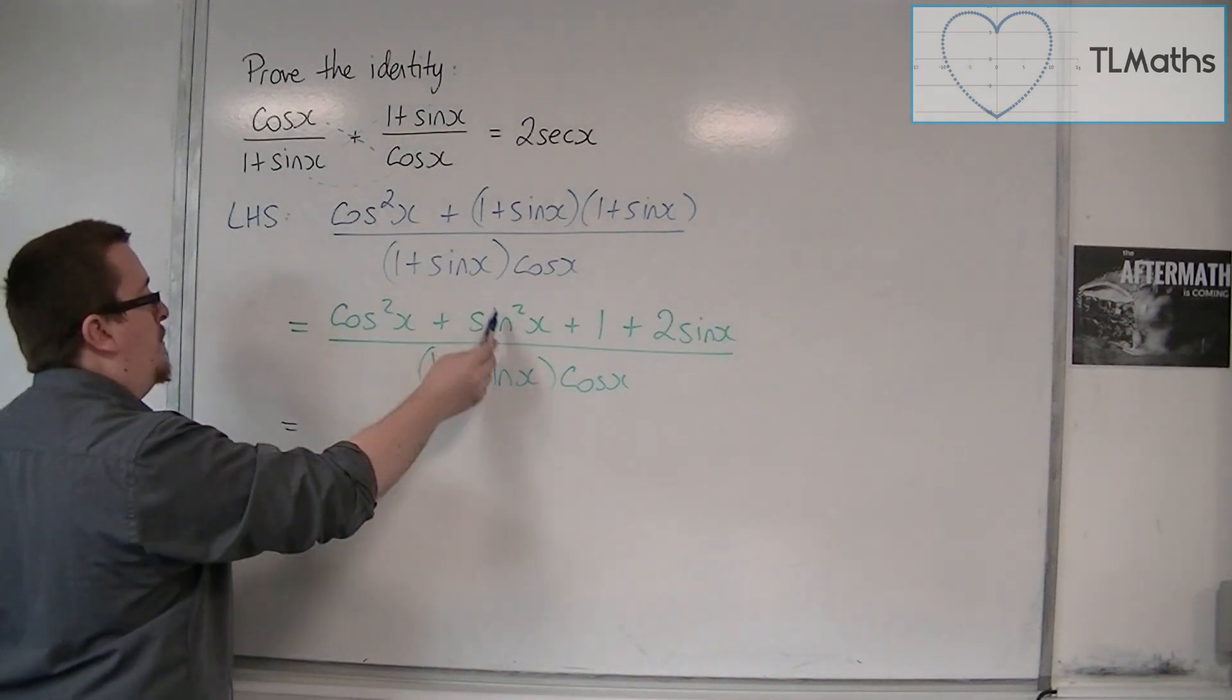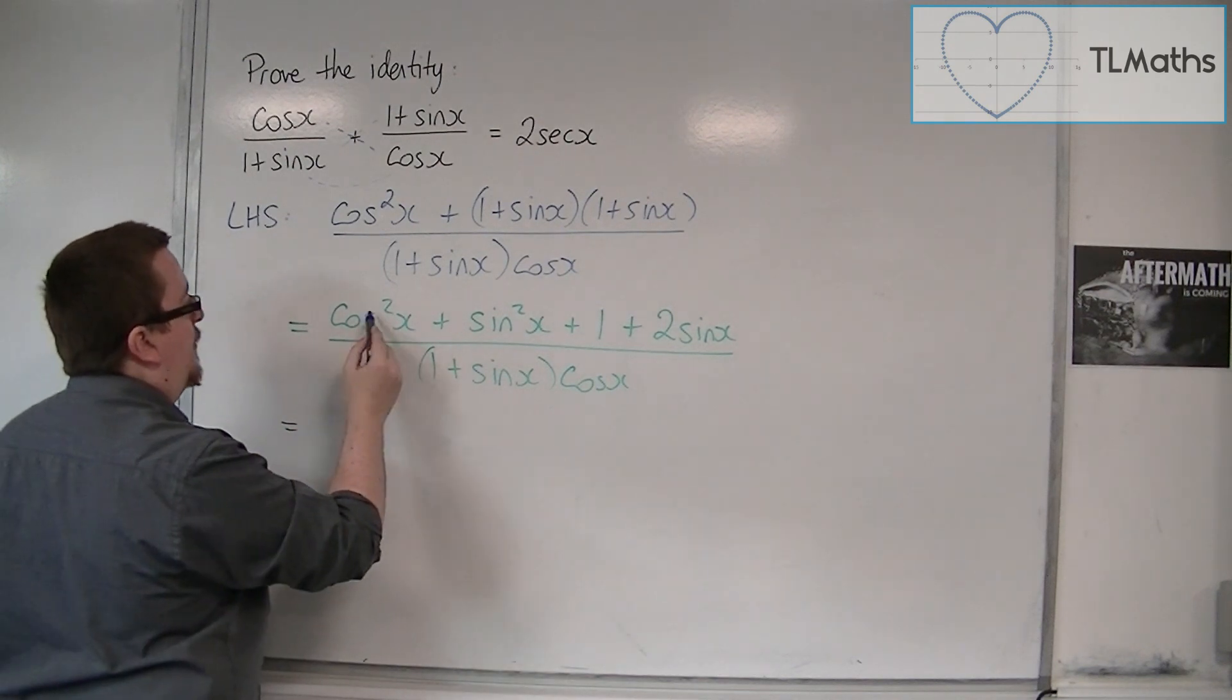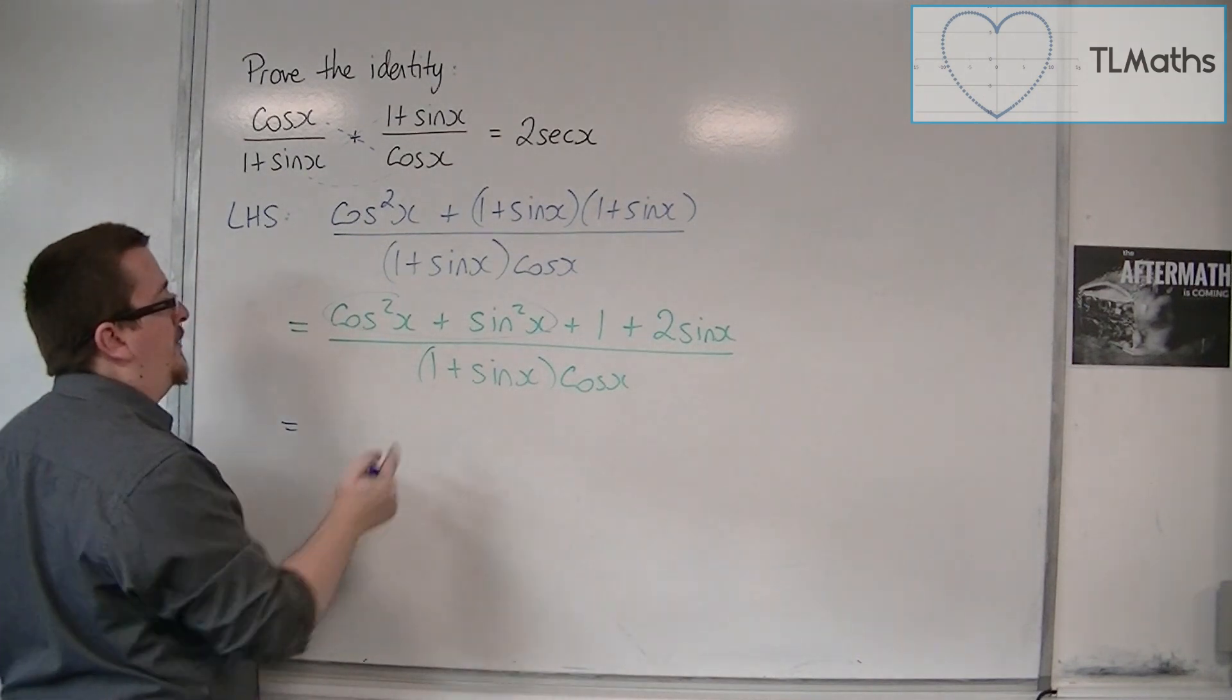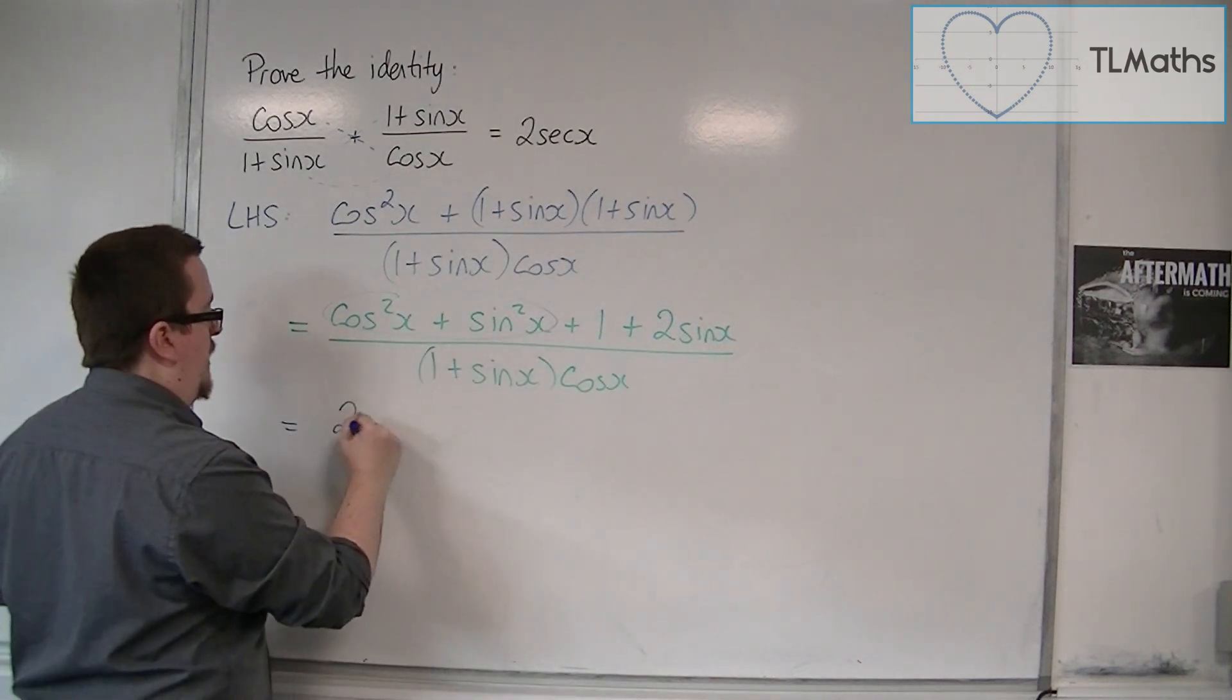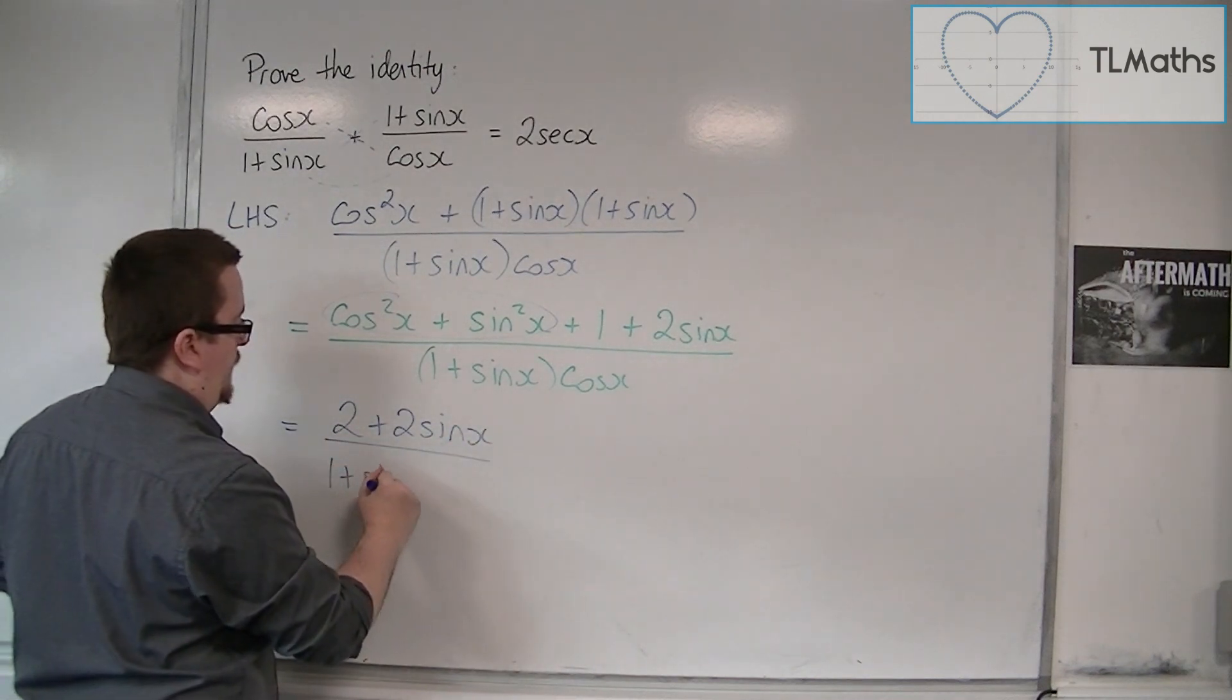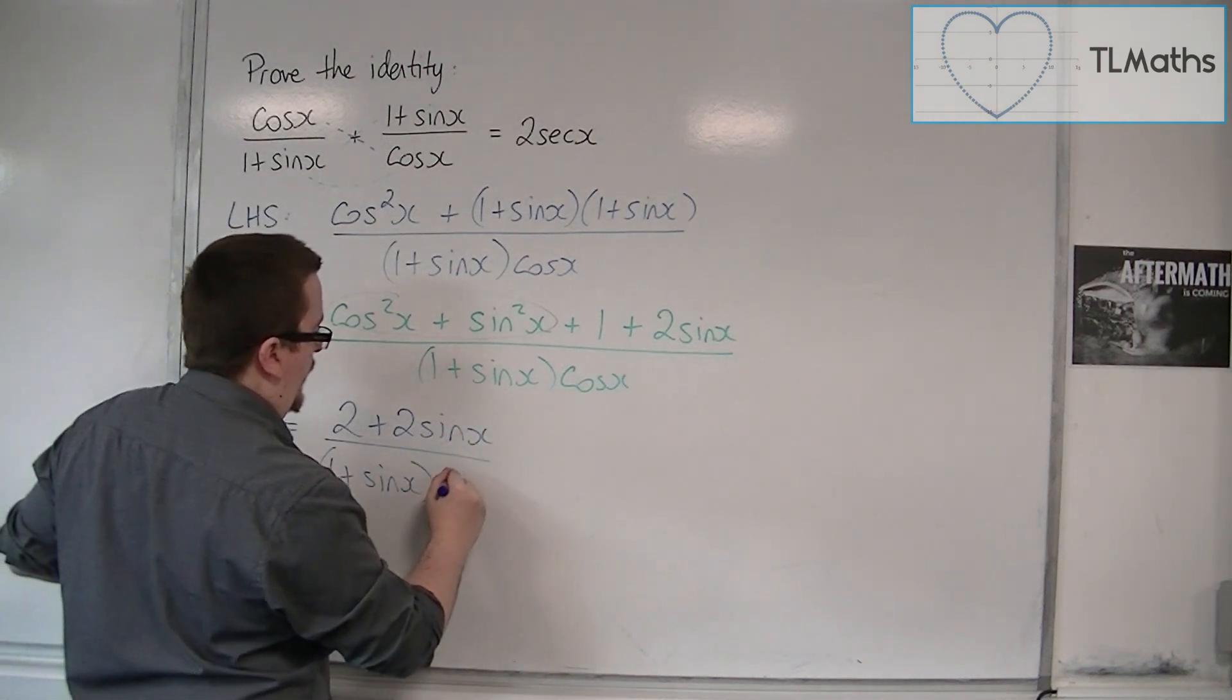Now cos squared plus sin squared, that's 1. So we actually have 1 plus 1 plus 2 sin x. So 1 plus 1 is 2. So we have 2 plus 2 sin x over 1 plus sin x times cos x.